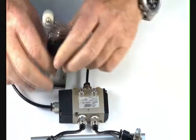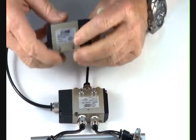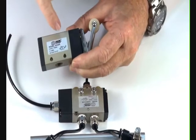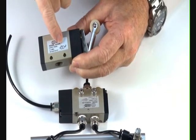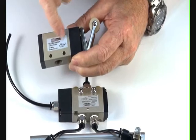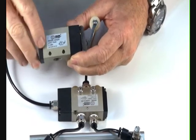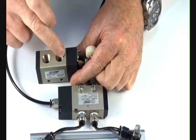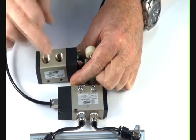This valve here has the inlet port, the outlet port, and the exhaust port. All these valves have the symbols on the side with the ports marked and they're in the relevant positions. You can also pipe this valve up normally closed or normally open depending on what your preference is.